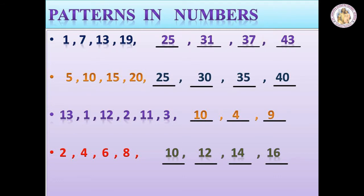Patterns in numbers. See the first sum. One, seven, thirteen, nineteen. What comes next? Twenty-five. How can we get twenty-five?